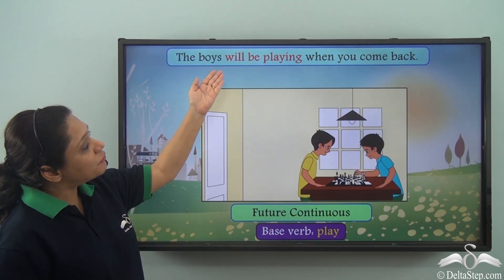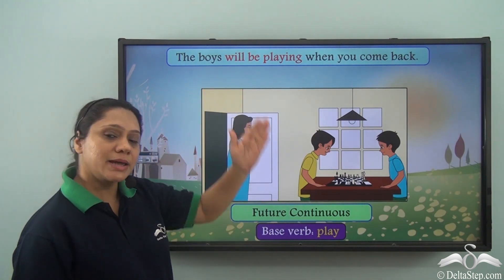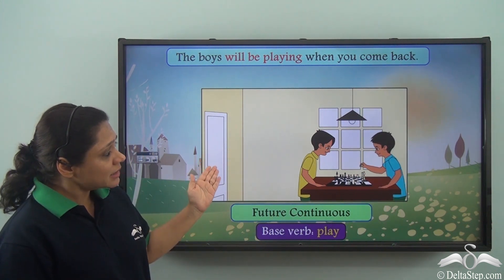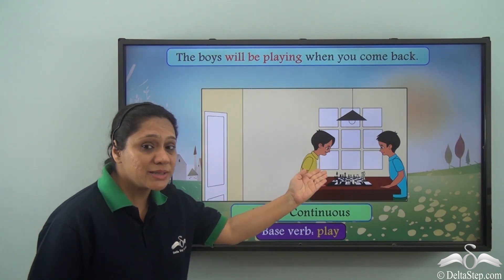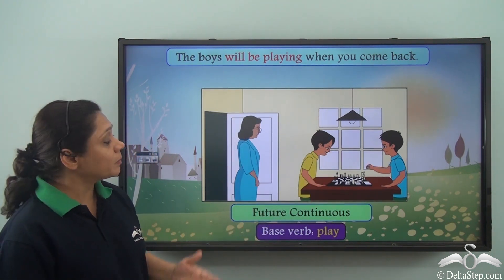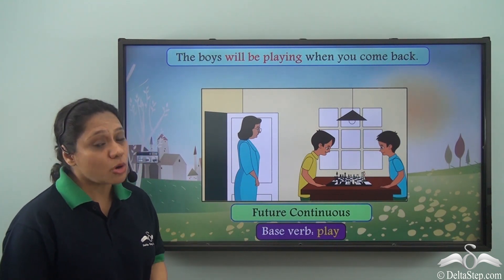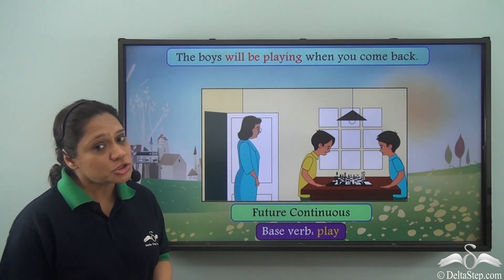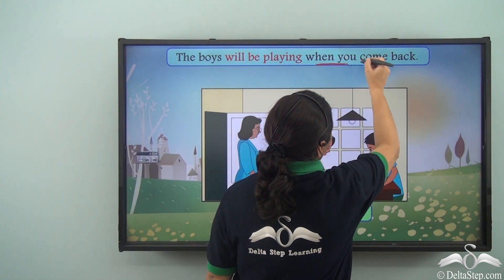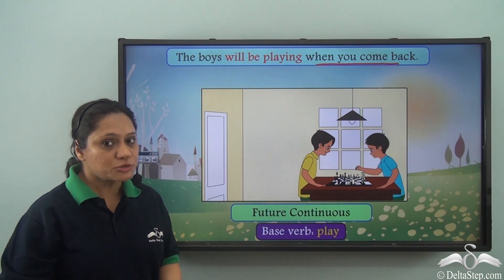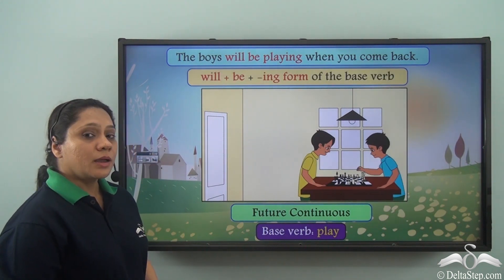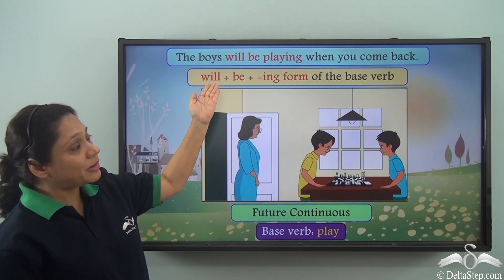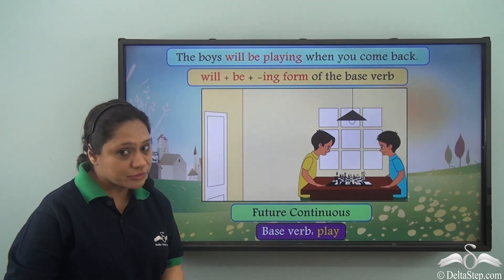The boys will be playing when you come back. This sentence is in the future continuous tense. When this lady comes back, the boys will be playing in the future. So the future continuous tense shows an action that will be in progress at a particular time in the future — 'when you come back' gives us that particular time. The verb form is made by using 'will' with 'be' and the -ing form of the base verb.